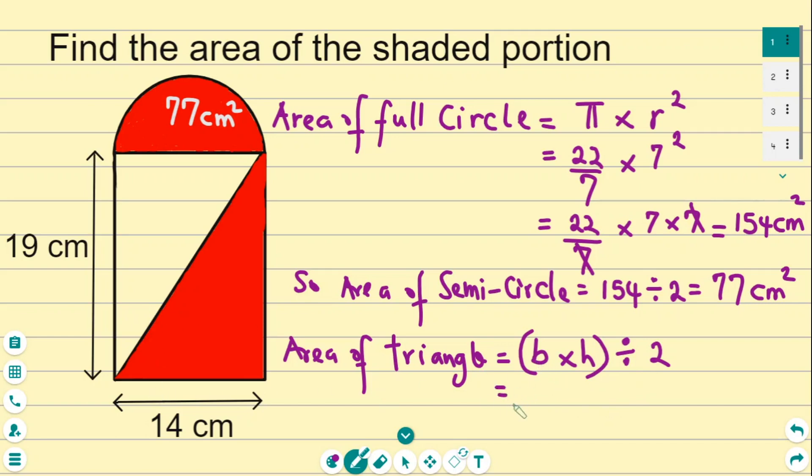We take the base, which is 14, and multiply by the height, which is 19, and then divide by 2. If you work this out with a calculator, you get 133 centimeters squared.